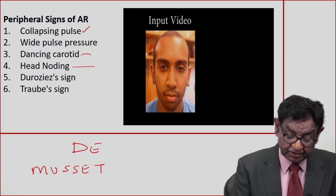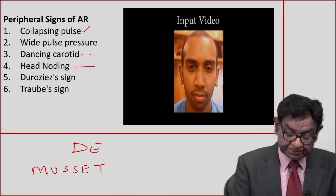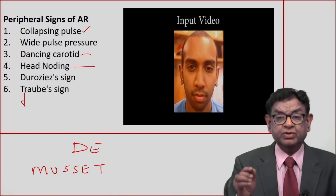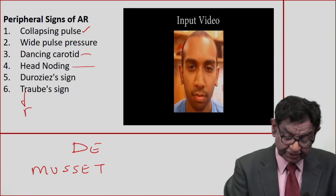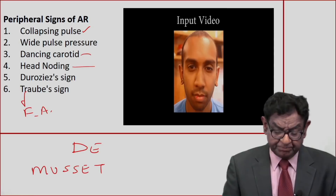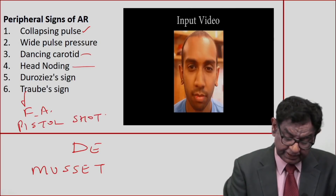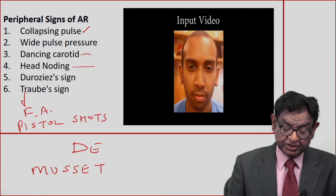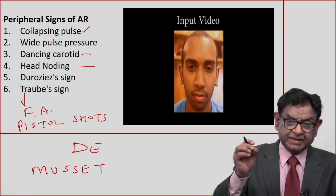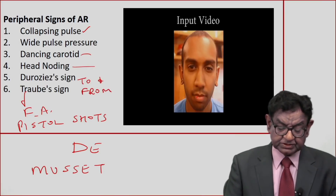Now we have Duroziez's sign and Traube's sign. For Traube's sign, you place your stethoscope over the femoral artery and you hear pistol shots — this is Traube's sign. For Duroziez's sign, you slightly compress the stethoscope over the femoral artery and you get a to-and-fro murmur — this is Duroziez's sign.